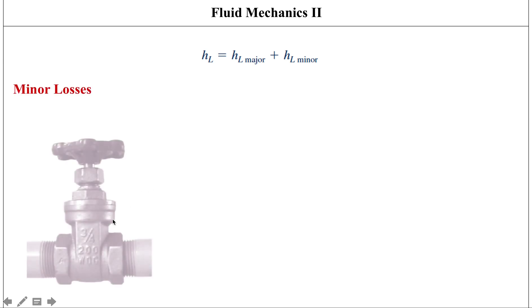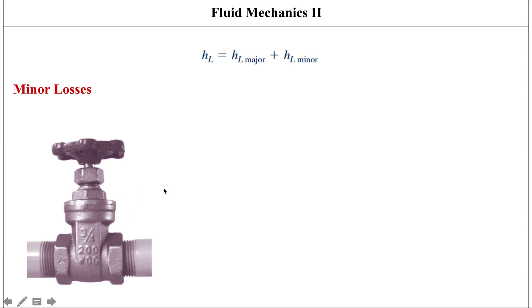There are different components we look at when considering minor losses. One of those components is a valve. Whatever the component may be — whether it's a valve or a T joint — the minor head loss associated with it follows a similar style. It's based on similar equations derived experimentally.